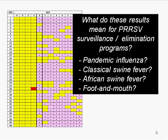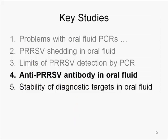What do these results mean for PRRS surveillance and elimination programs? And beyond PRRS — what about pandemic influenza, classical swine fever, African swine fever, foot-and-mouth disease? These are foreign animal diseases the rest of the world has had to deal with, and we're going to have to deal with them too.